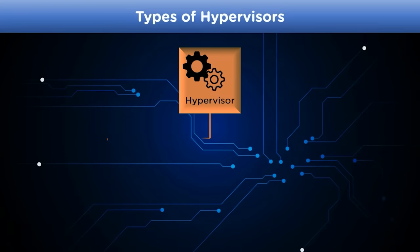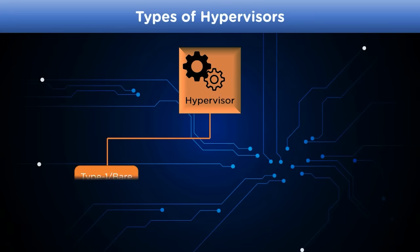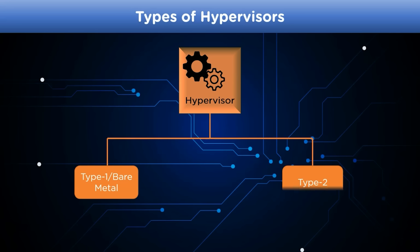There are two types of hypervisors. The first is the Type 1 hypervisor, also known as the bare metal hypervisor, which directly interacts with the hardware system and user resources. The second is the Type 2 hypervisor, which runs as an application on the host operating system and coordinates with the virtual machine for resource management.